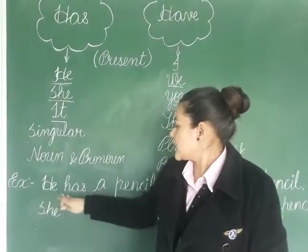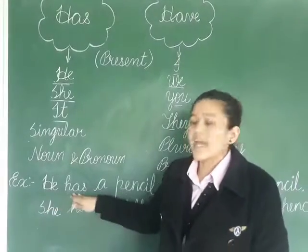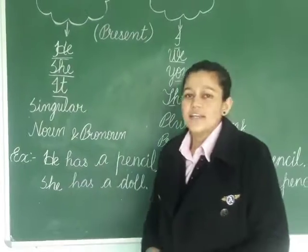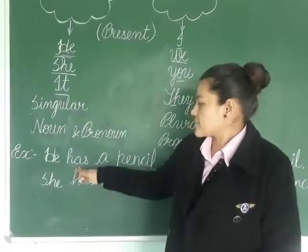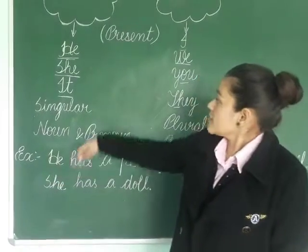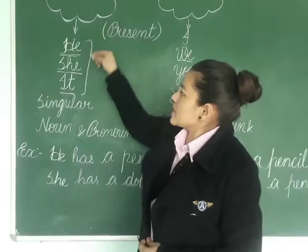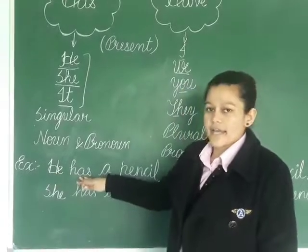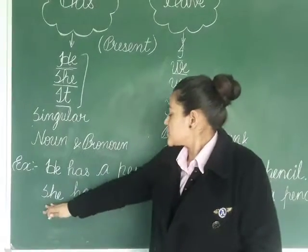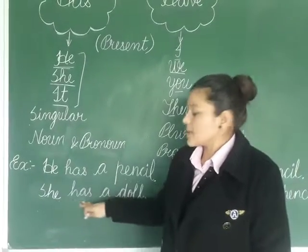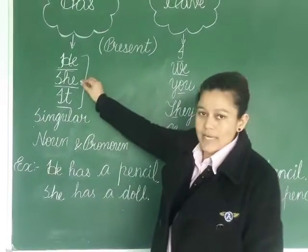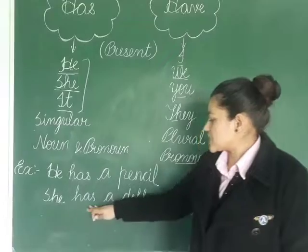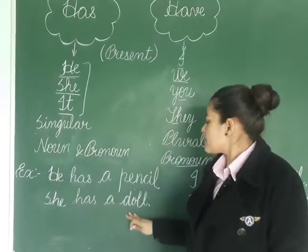First example: 'He has a pencil.' He has a pencil means he possesses a pencil. Here you can see the use of 'has' with 'he'. Another example: 'He has a doll.'